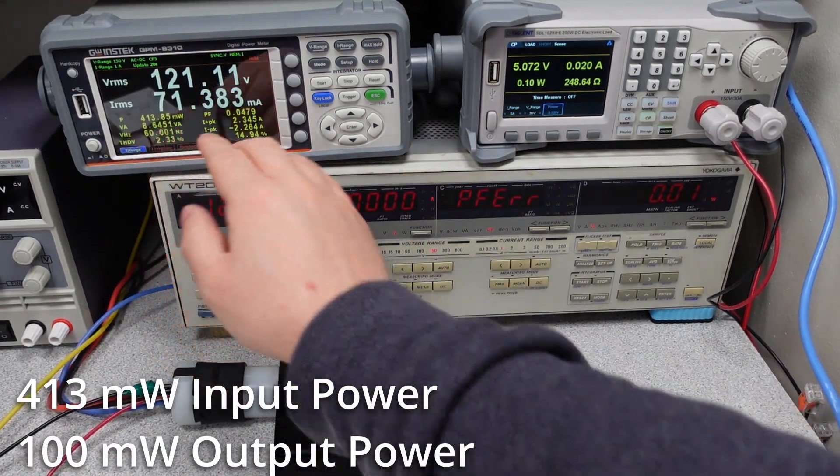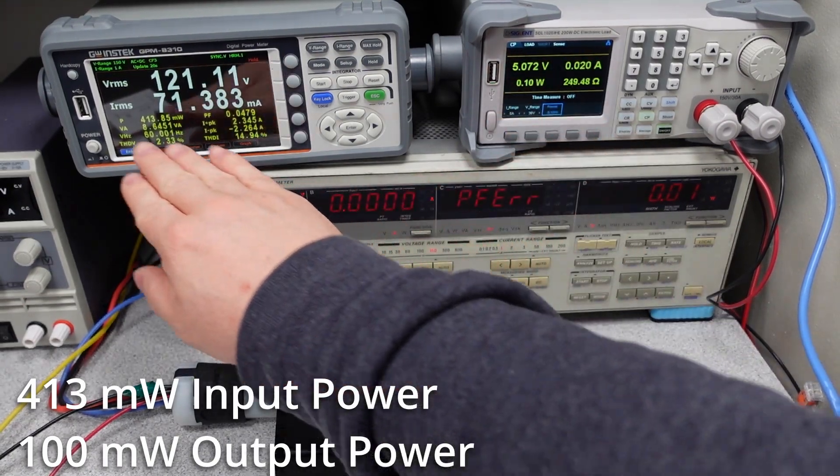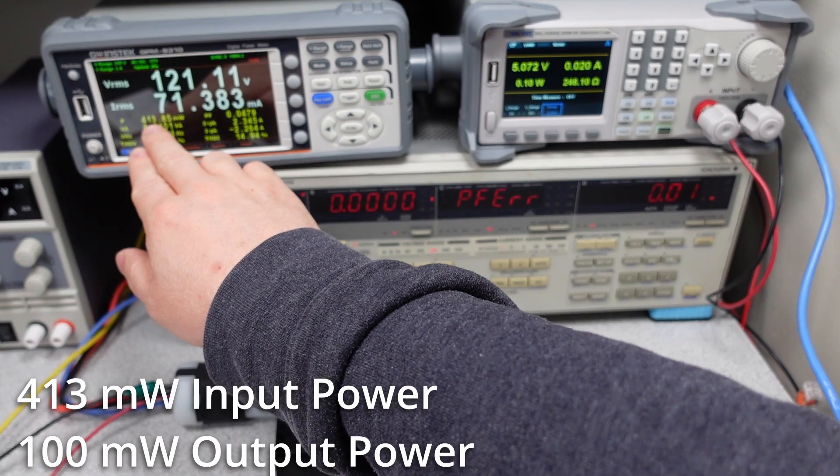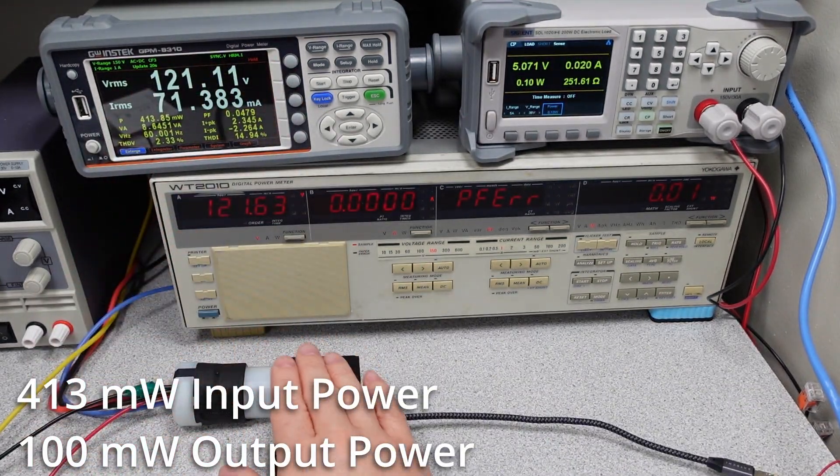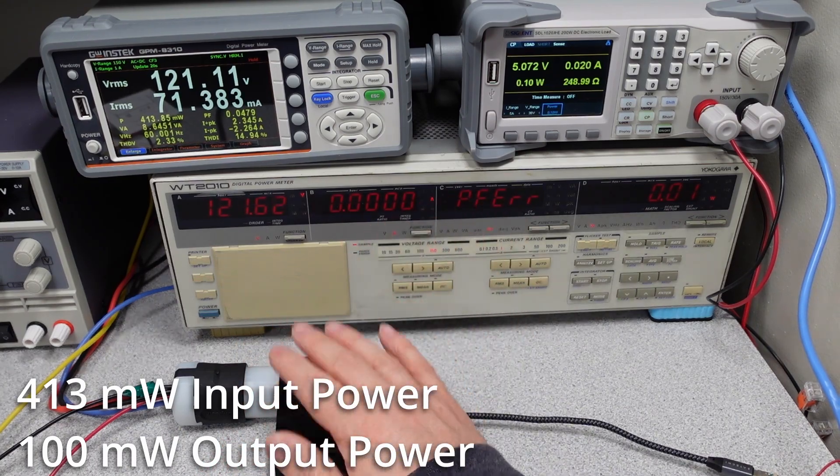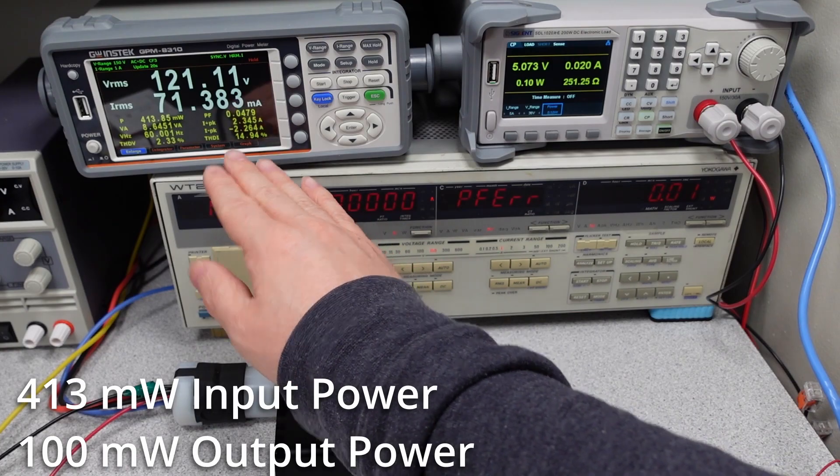I went ahead and grabbed the data for the idle conditions. We're using 0.1 watts at 5 volts. You can see our power has come up to about 413 milliwatts. This is that ultra light load condition. Basically, sometimes you plug a cable into this thing or something like that, it'll sit around this point, even though it's doing nothing.